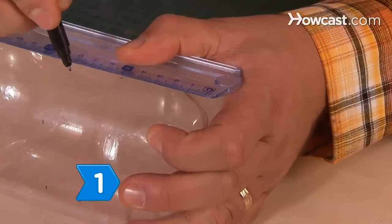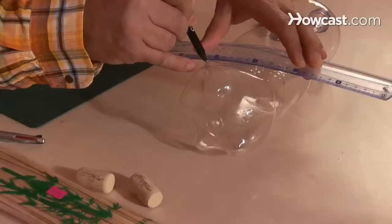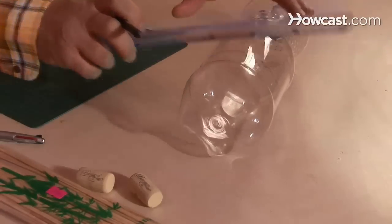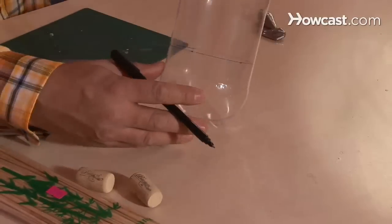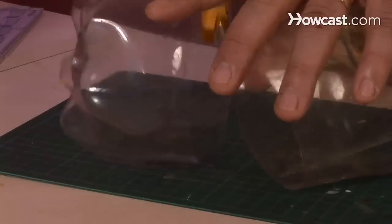Step 1. Measure and mark 8 centimeters up from the bottom of the bottle in 3 or 4 places around the bottle. Then draw a line around the bottle connecting your marks. Using the craft knife, cut along the line to remove the bottom of the bottle.